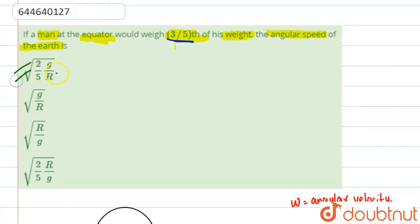Square root of two by five g by r. So basically this is our answer. Answer is option number A. Thank you.